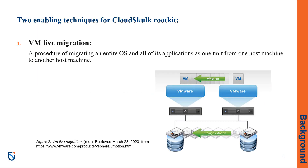There are two enabling techniques for our CloudSkulk rootkit. First, VM live migration, and the second is nested virtualization. In this section, we first describe these two techniques and then we present our threat model. Previous works define VM live migration as a procedure of migrating an entire OS and all of its applications as one unit from one host machine to another host machine.